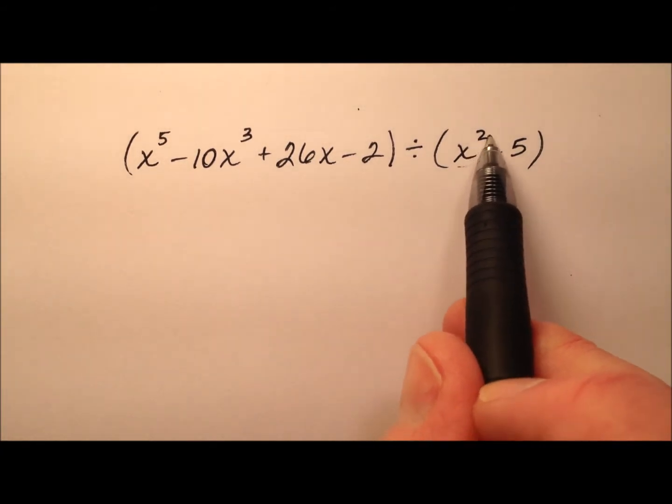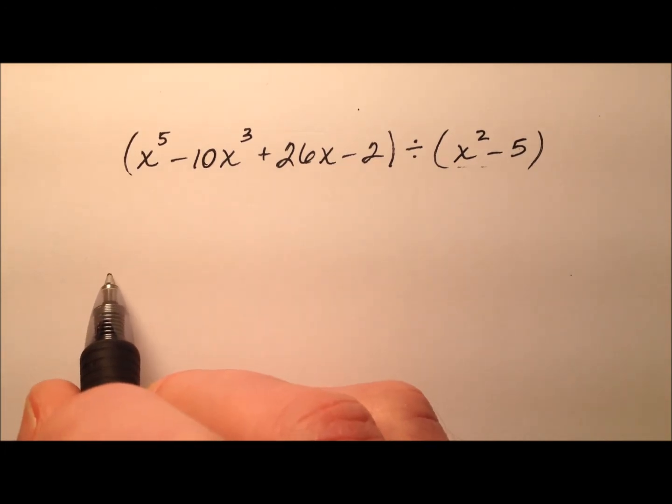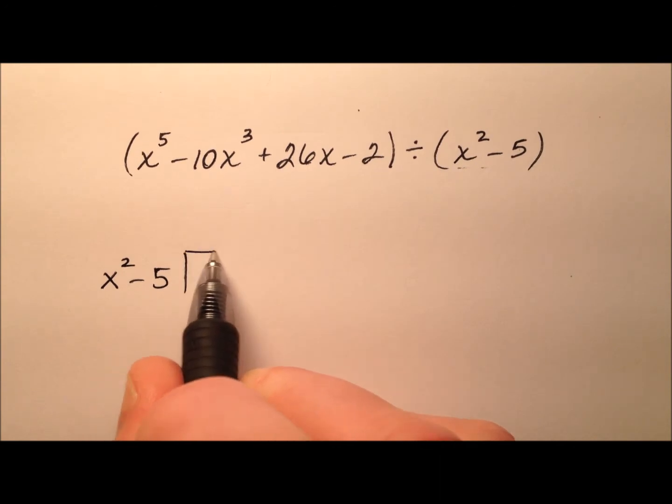So my divisor x squared minus 5 you'll notice is also missing a term but to begin that part doesn't matter. So x squared minus 5 I'm going to put out front.